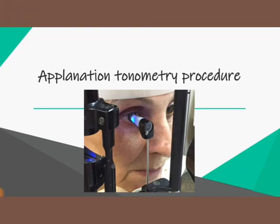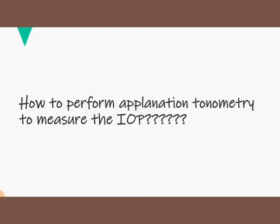Hello friends, welcome to my new video. Today we are going to see how applanation tonometry is performed to measure the intraocular pressure of the eye. In my previous video on tonometry, I discussed that applanation tonometry is based on the Imbert-Fick principle, which states that the pressure inside a thin-walled sphere is equal to the force necessary to flatten the surface divided by the area of flattening — that means P is equal to F divided by A.